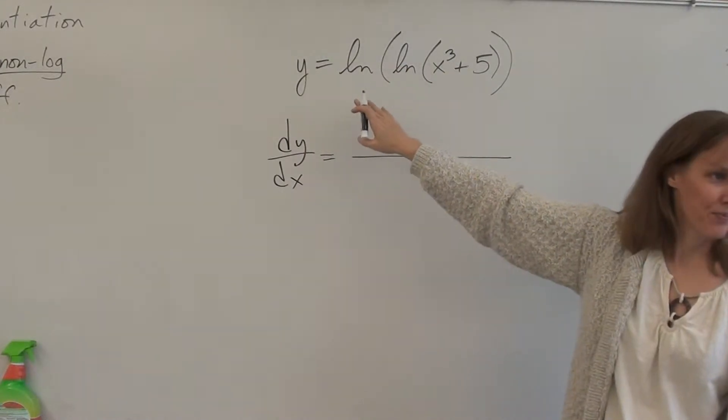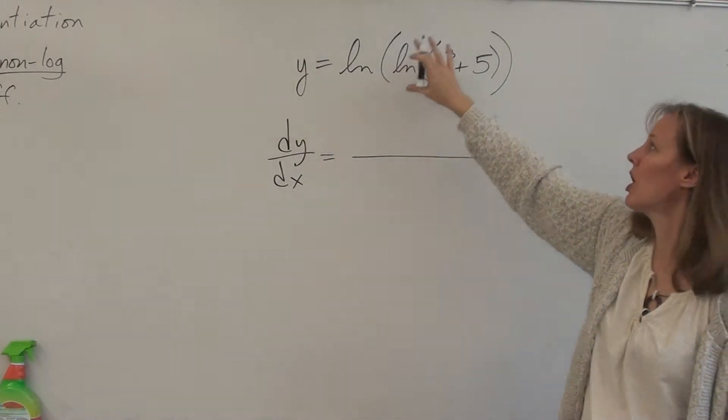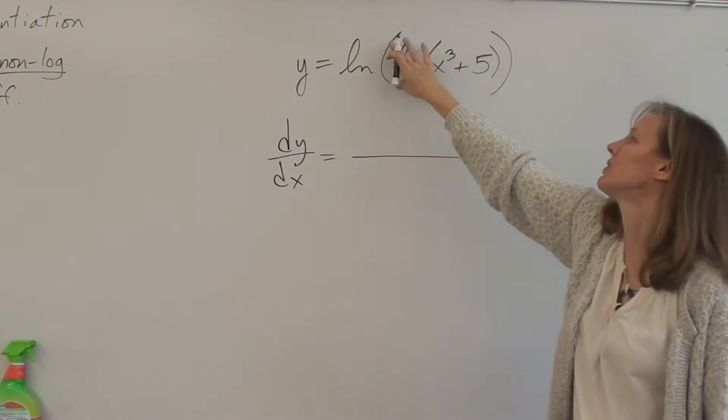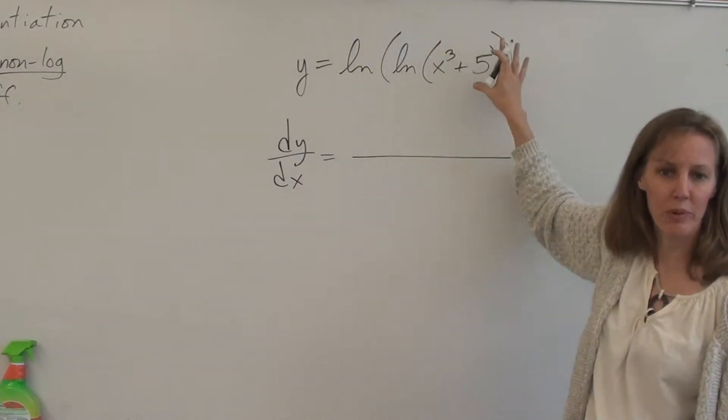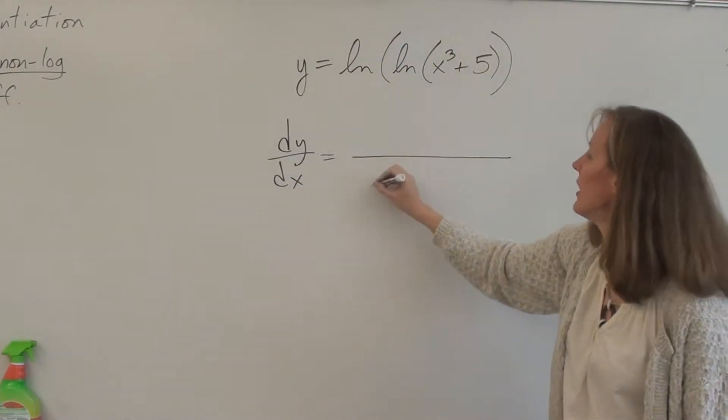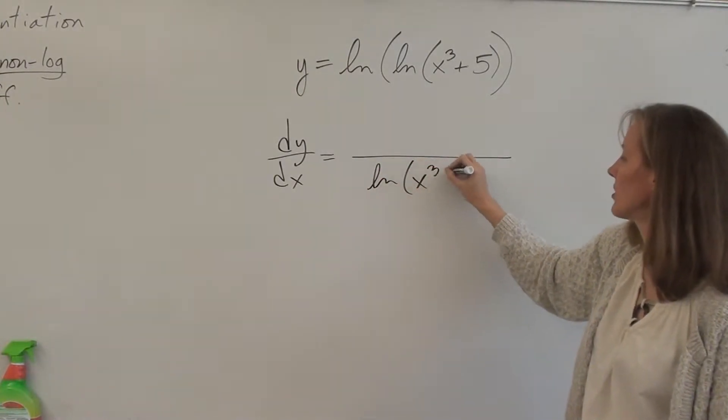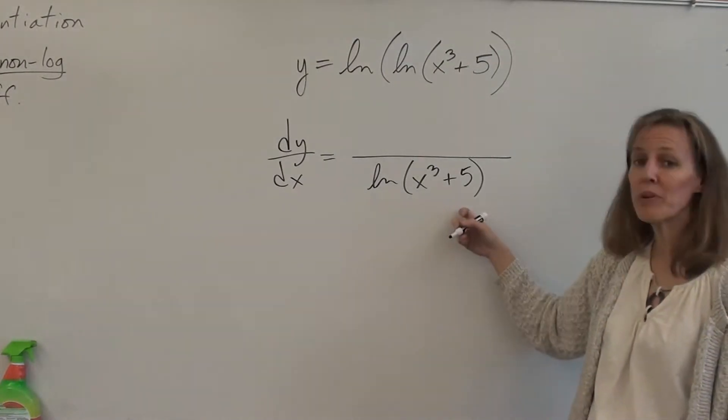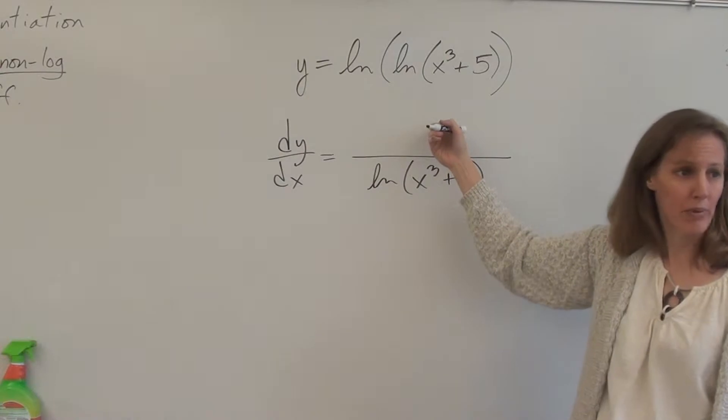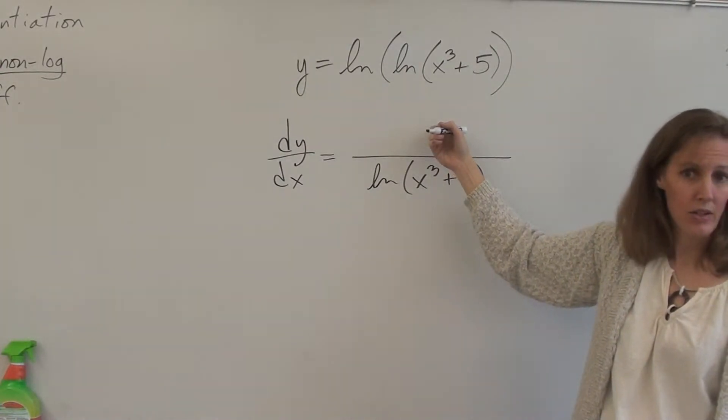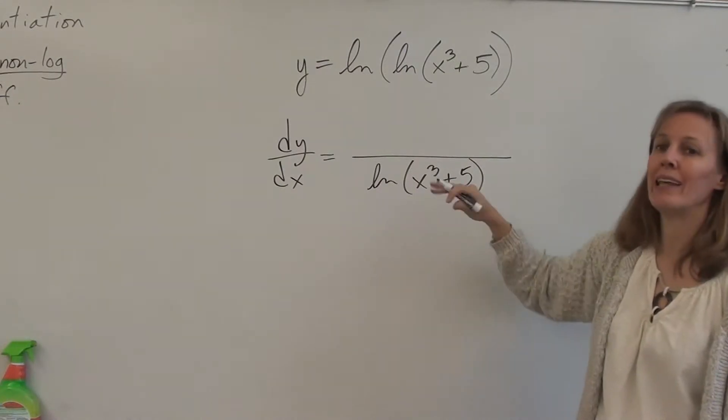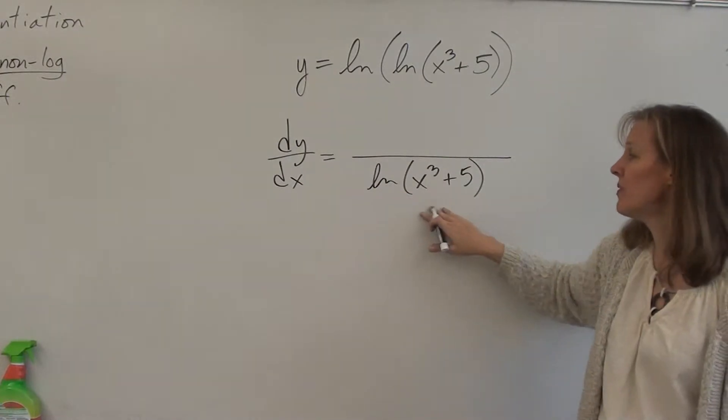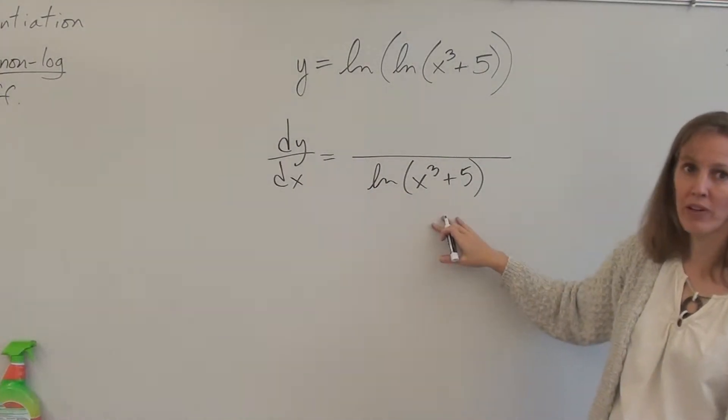Okay, outside in. The derivative of a natural log of stuff, and I'm going to take away stuff in a moment, but the ln of stuff, you put the stuff on the bottom. So the whole argument goes on the bottom. It doesn't matter what's inside, whatever it is, goes on the bottom. Right? Then its derivative goes on top. Do you understand that? Right. Okay, so the argument goes on the bottom, and then the derivative of that argument goes on top. So we need the derivative of ln of x cubed plus 5. What's the derivative of ln of x cubed plus 5?